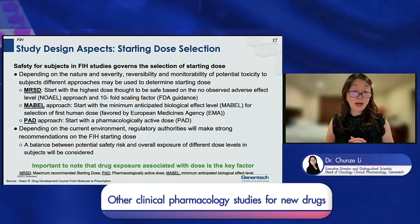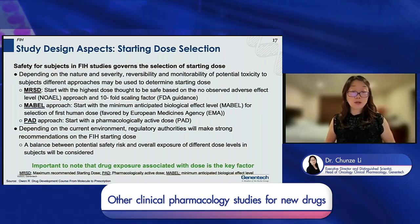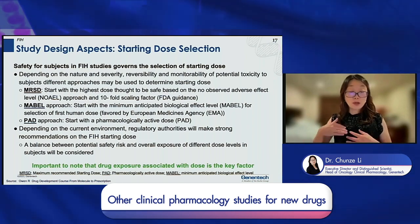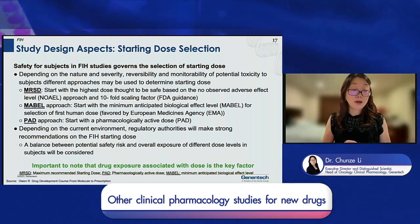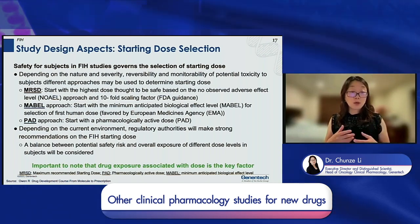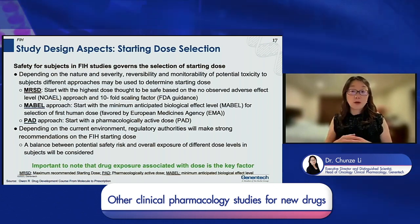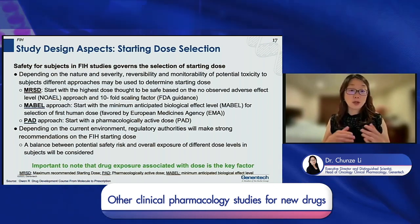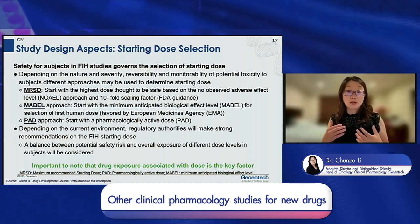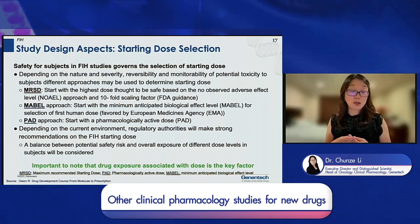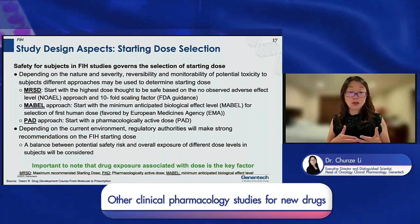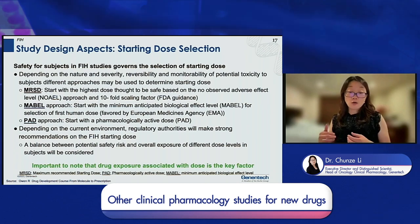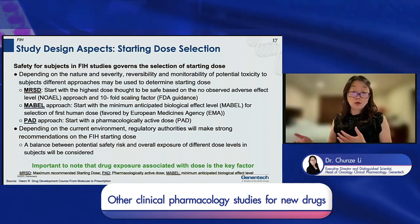The third approach is an intermediate between the first two — a pharmacologically active dose — starting at a dose where we potentially see some PD biomarker modulation. Which method we use for the first in-human starting dose depends on the nature of the mechanism of action and the severity of the toxicity observed, balancing the potential safety risk against the overall exposure at different dose levels.